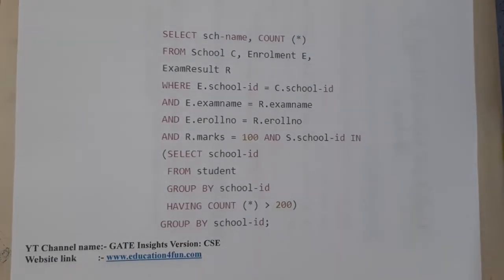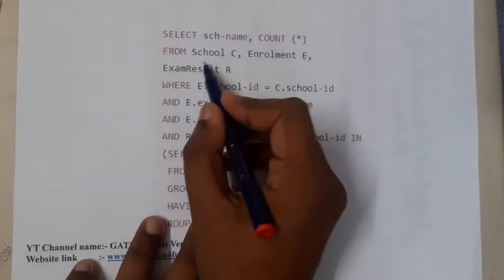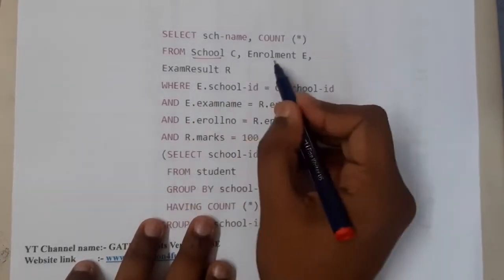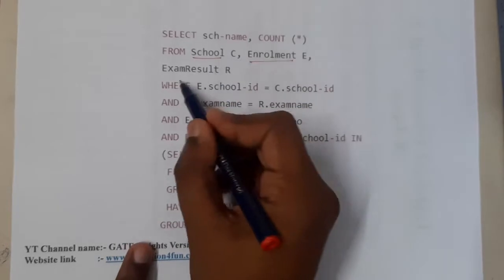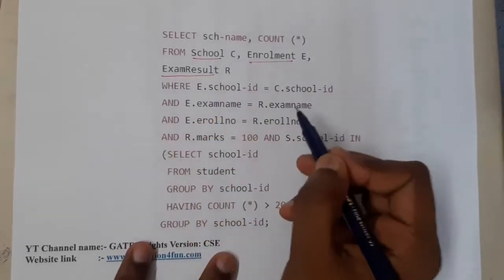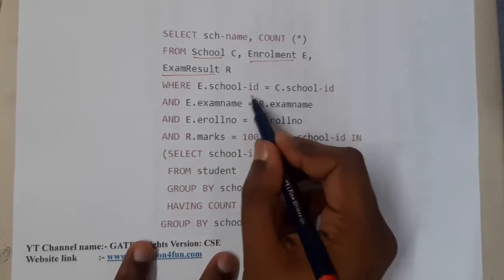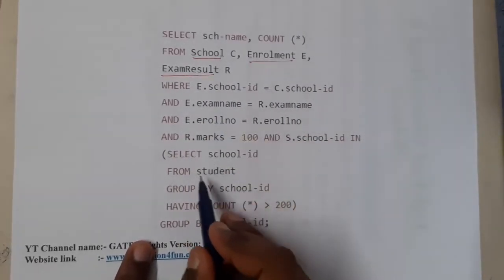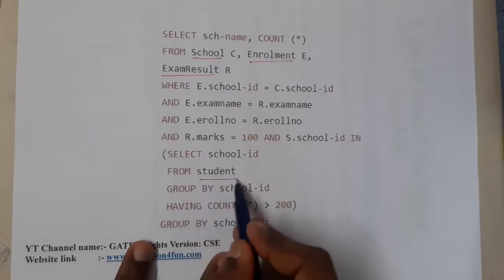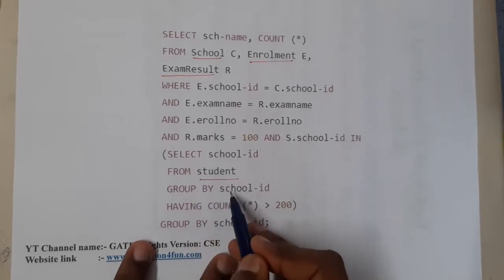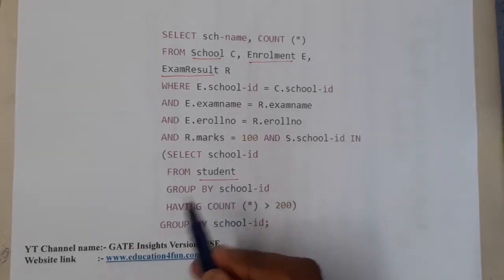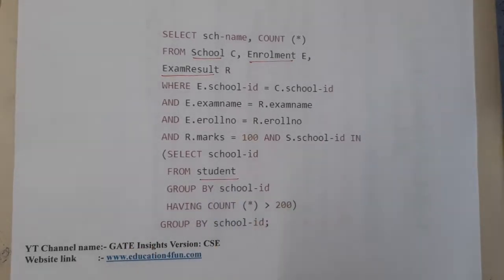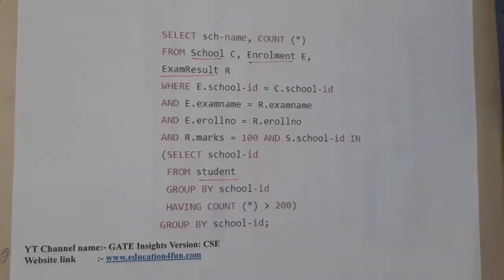They are using a school table, enrolled table, exam result table, and the student table as well — so indirectly all four tables are being used. Now I need to write an example for this.